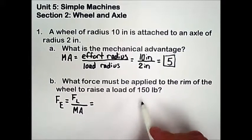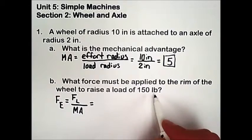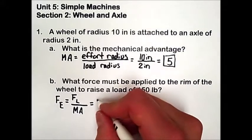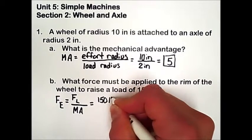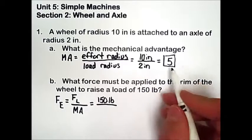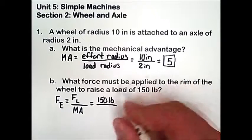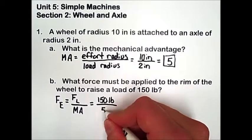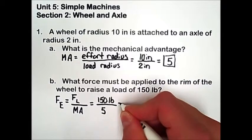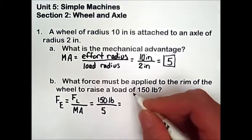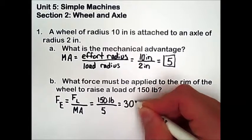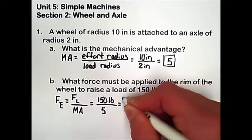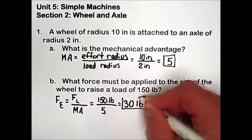In this problem, the load force will be 150 pounds, and the mechanical advantage we found in the previous part to be 5. So taking 150 pounds divided by 5, we end up with an effort force of 30 pounds.